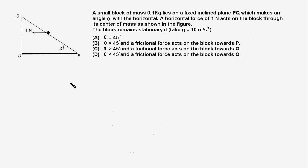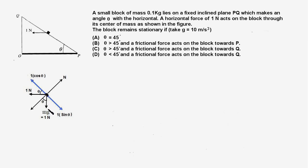The first step in solving such problems is to draw an FBD. Here is the FBD of the block showing all the forces acting on it. The weight Mg acts downwards — Mg is 0.1 times 10, which equals 1 Newton. The horizontal force of 1 Newton is acting towards the left. These two forces have components along the plane: 1 cos theta is the component of the externally applied force acting up the plane, and the component of the weight acting along the plane is 1 sin theta.